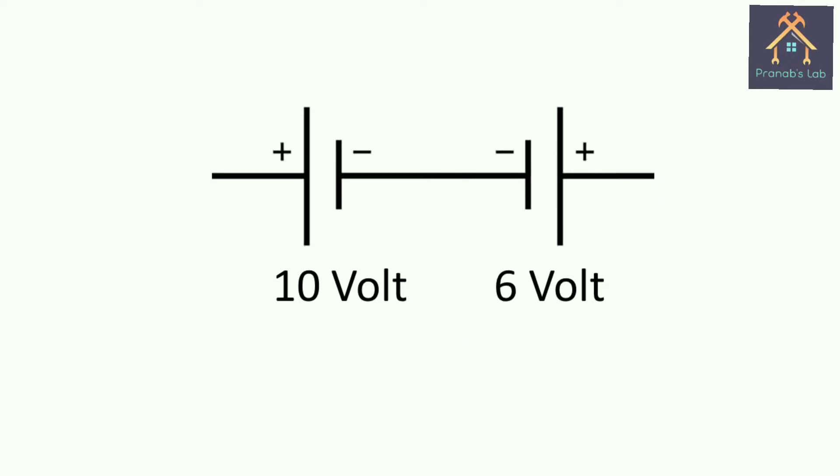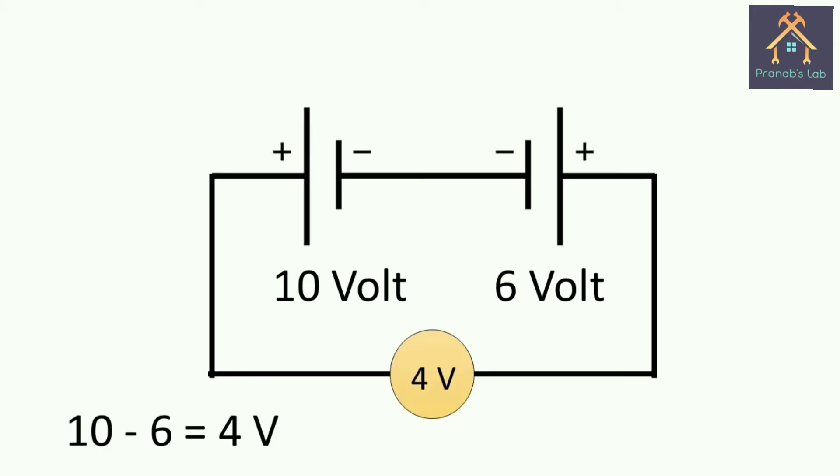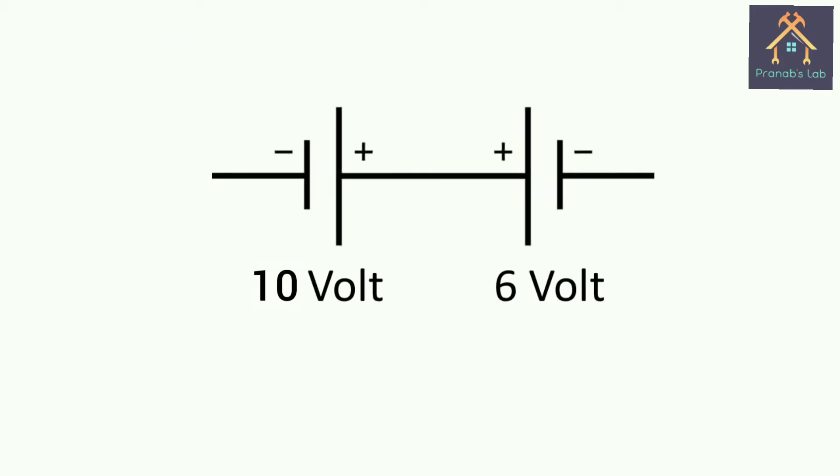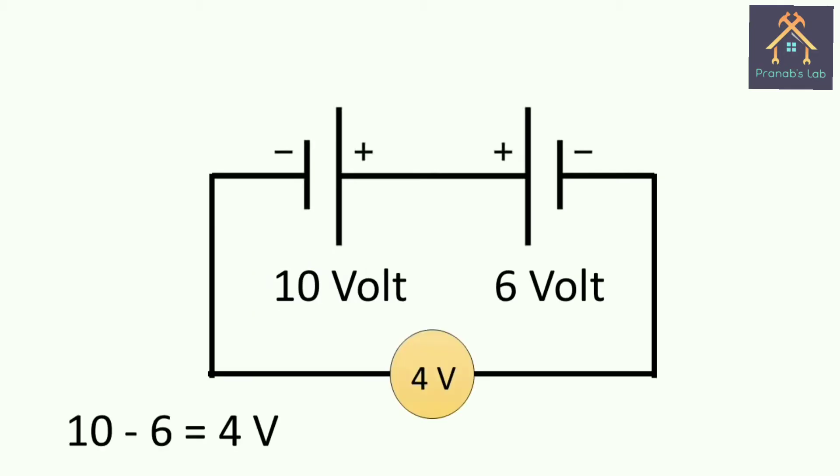Now if these two sources are connected in opposite to each other as shown in figure, then we will get 4V as resultant, because the two sources oppose each other. This connection is called subtractive polarity. If the two sources are connected like this, then also resultant voltage will be 4V, same as earlier.